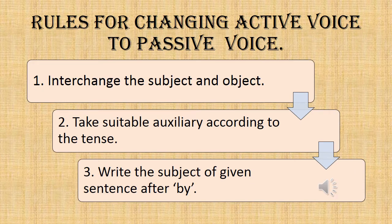Let's have a look at the rules for changing active voice to passive voice. The first rule is to interchange the subject and object. The second rule is to take a suitable auxiliary according to the tense. The third rule is to write the subject of the given sentence after 'by.'